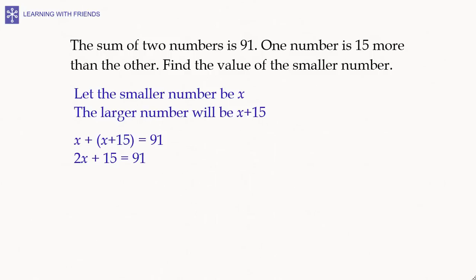This is a linear equation in one variable x. We solve it the way we solved the earlier equation. We subtract 15 from both sides of the equation, so that on the left hand side we are left with just 2x, and on the right hand side we get 91 minus 15, which is 76. To further isolate x, we divide both sides of the equation by 2.